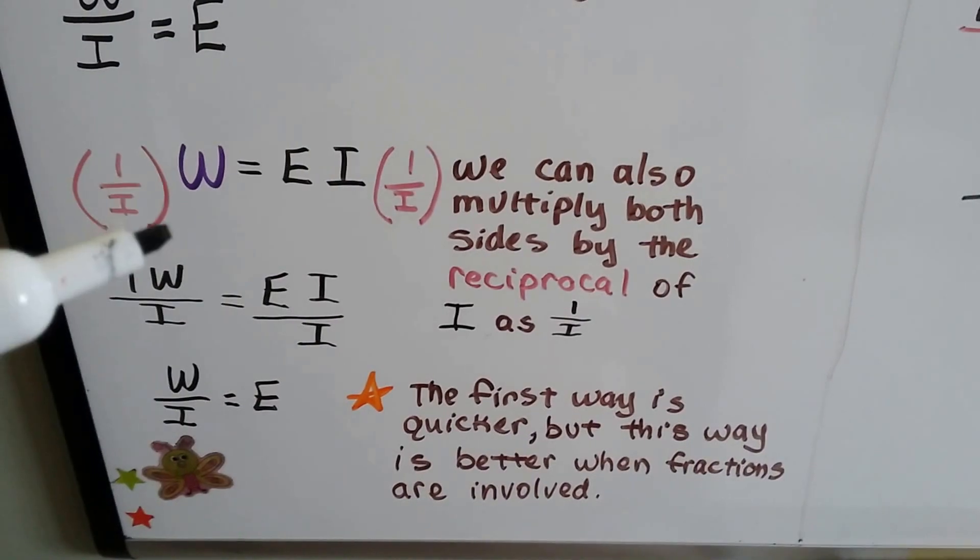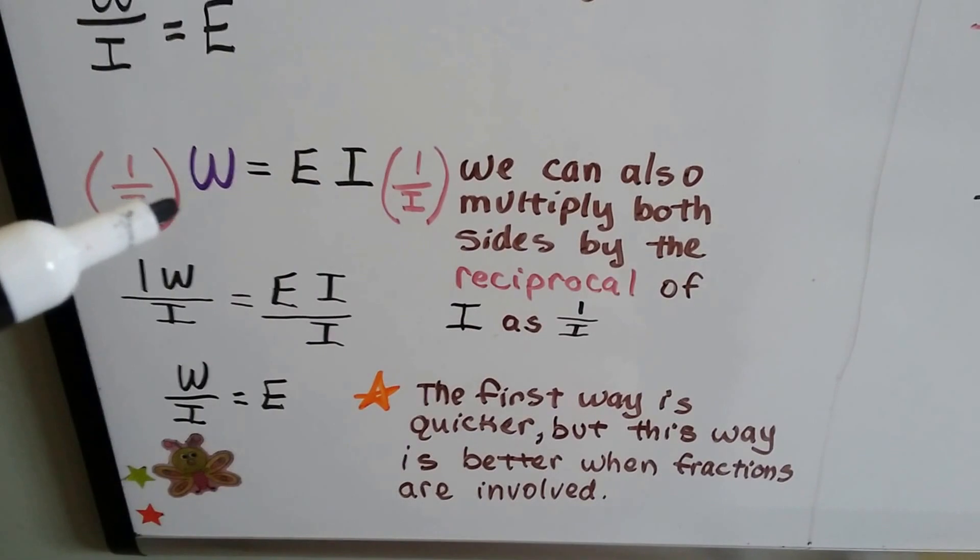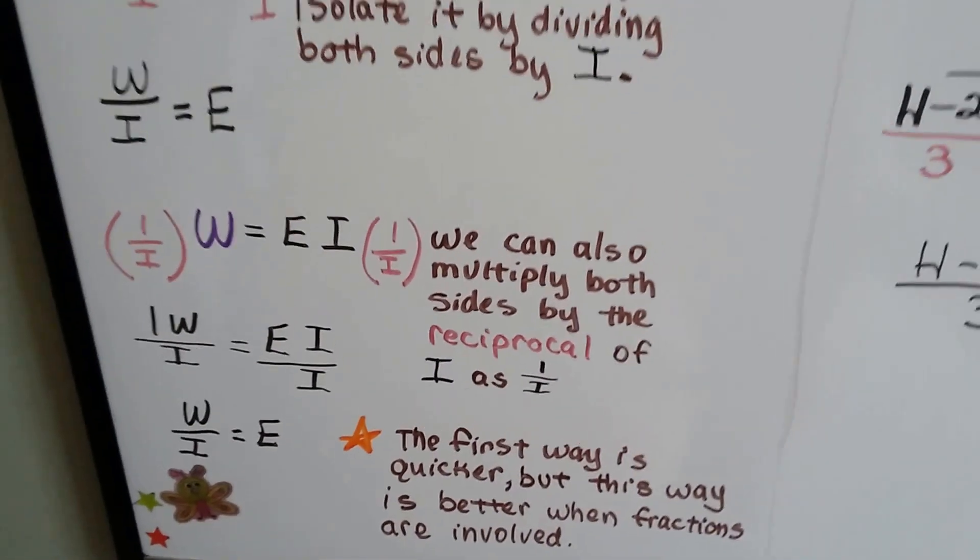That first way is quicker, but it's better when fractions are involved to do it this way. When there's fractions in the formula, multiplying each side by the reciprocal of that fraction can be easier.